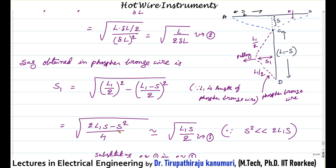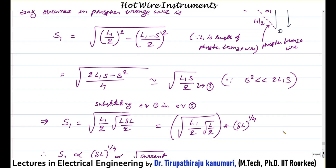Again, the value of sag squared is neglected because the sag is far less than the length of the phosphor bronze wire — S squared is far less than 2 times L1 times S. We get sag S1 equal to the square root of L1 times S divided by 2. Substituting the value of S from equation 1, S1 becomes delta L to the power of 1 by 4, or the fourth root of delta L.